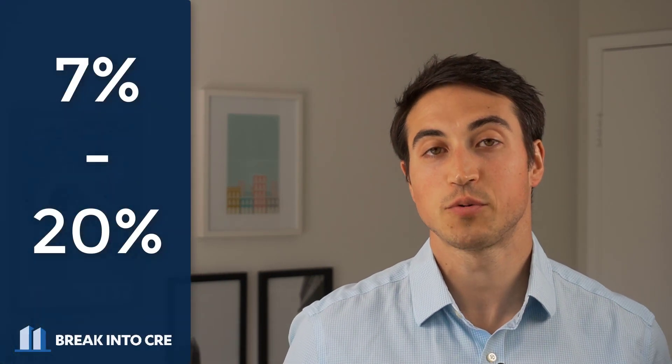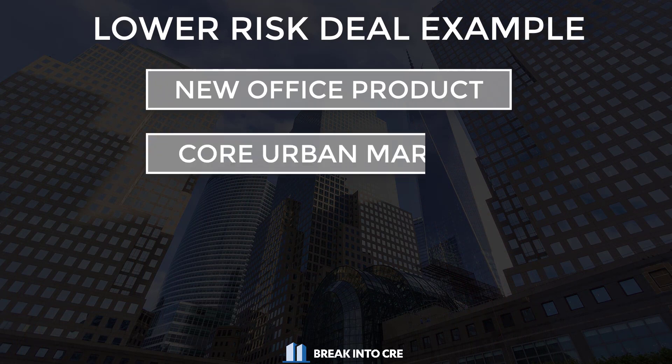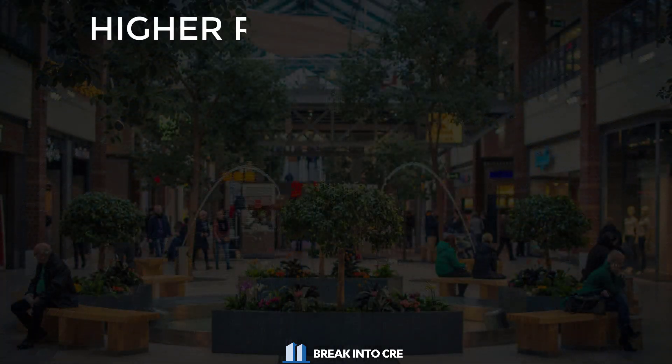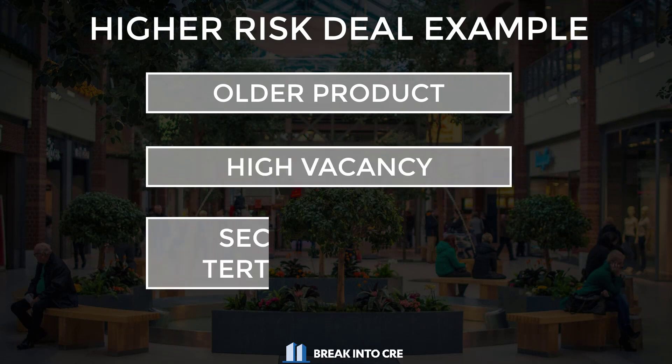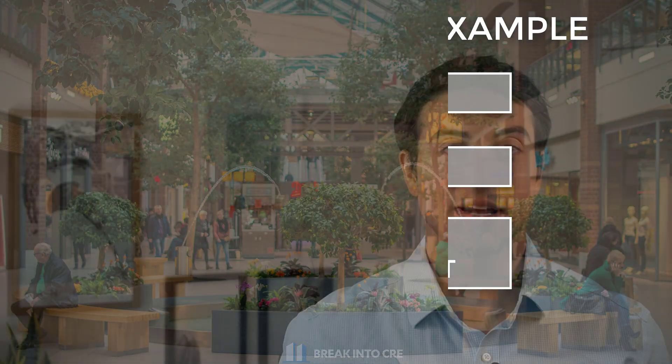Now in real estate on a leveraged basis — meaning that there is debt being used to acquire the property — most return targets are somewhere between 7% and 20% per year. This is going to be based on the risk level of the deal. So if you're buying a brand new office building in downtown Manhattan with Google as your main tenant, you may use a discount rate closer to 7%. On the other hand, if you're buying a 20-year-old, 60% occupied shopping center in Phoenix, Arizona, that discount rate would be much closer to 20%, in order to compensate investors for the risk they're taking by investing in that deal.